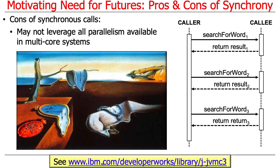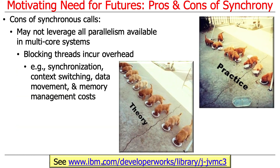There are downsides, however. One thing that's hard to do with synchronous calls is leverage all the available parallelism in a multi-core system. If you have synchronous calls, you're going to block. And as we've talked about before, when you block, you incur extra overheads: synchronization, context switching, data movement, memory management — these all cost something. If you're not careful, you can end up with a system that has lots of threads running around, blocking, and it becomes confusing, hard to reason about, and inefficient.